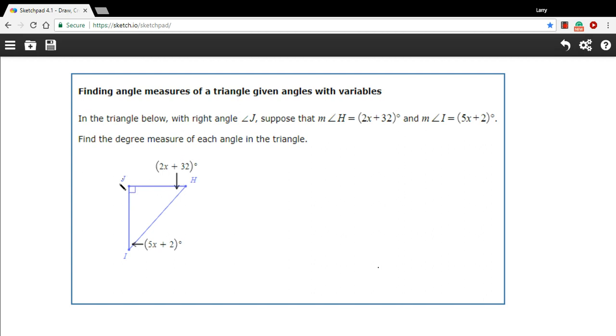This one right here is given to us already. That little box means that this is a 90-degree angle. So if I wanted to set up an equation where I added all the angles together, I could say 90